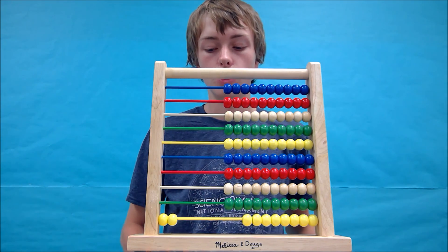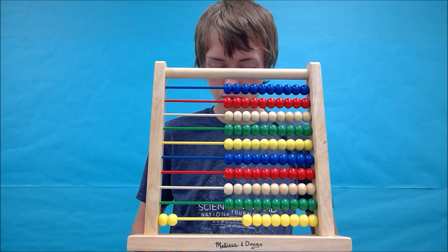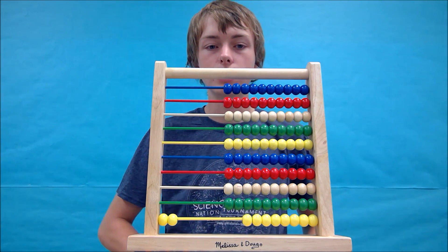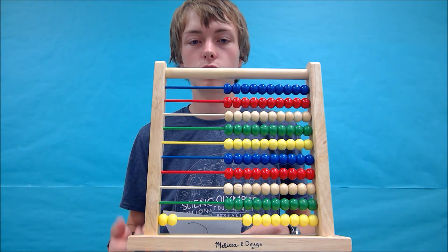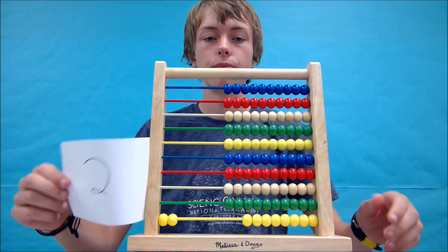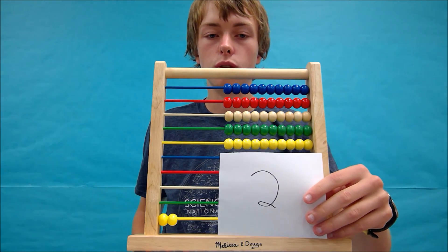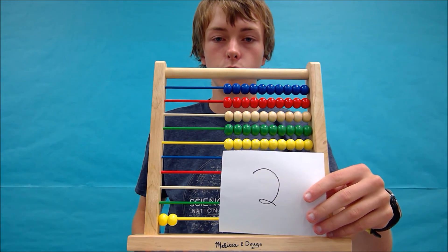This leaves us with our answer. Easy enough to figure out. I'm still going to write it down just so you can see it a little better, and to get in the habit because writing it down later will be really helpful. In this situation, it's 2. 2 beads left. This is what your abacus should look like as well.